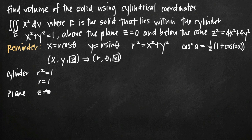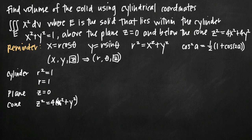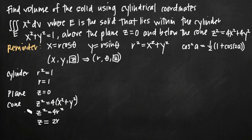What about our cone? We have z squared equals 4x squared plus 4y squared. We factor out a 4 to get z squared equals 4 times the quantity x squared plus y squared. Substituting r squared for x squared plus y squared, we get z squared equals 4r squared. Taking the square root of both sides to solve for z, we get z equals 2r. We only use positive 2r because we're dealing with a physical three-dimensional object.